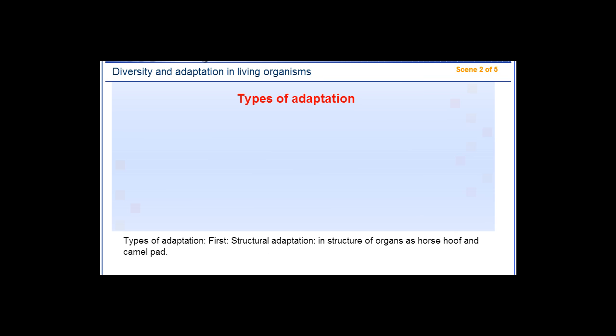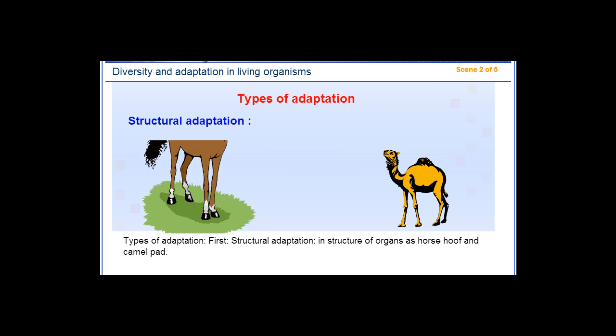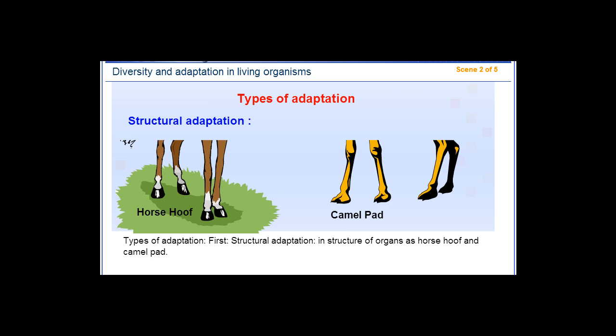Types of adaptation: First, structural adaptation in the structure of organs, such as horse hoof and camel pad.